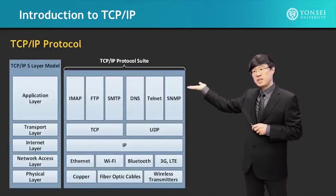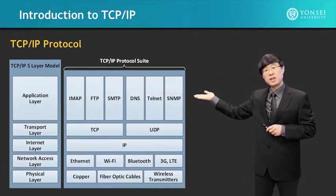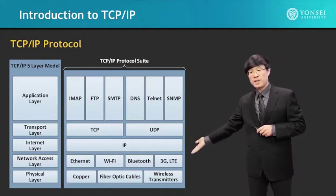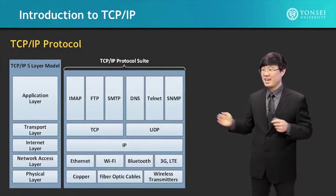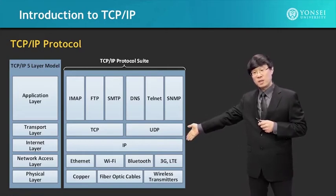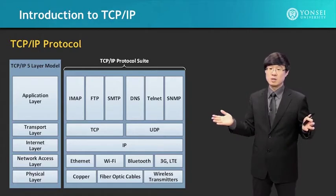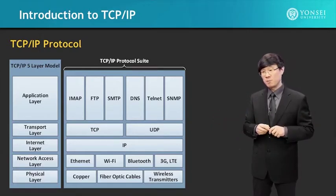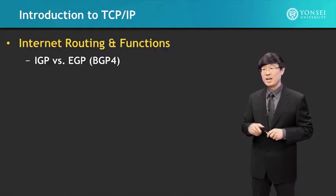For example, the TCP/IP protocol structure 5-layer model is shown, with corresponding protocols and functions for each layer. At the bottom you can see Ethernet, Wi-Fi, Bluetooth, and 3G/4G LTE communications — these are the options that we've always been using. So it's time to learn how this all works together.